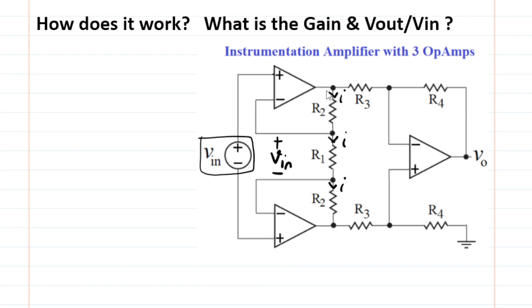So therefore, for node A to B, we can find the voltage delta between these two guys. What I can say is the current I flowing through R1 is just simply the voltage across R1, which is Vin divided by R1.